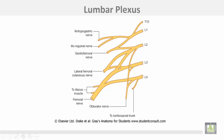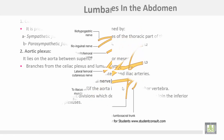These are the branches coming out from the lumbar plexus: ilio-hypogastric, ilio-inguinal, genito-femoral, lateral cutaneous nerve of the thigh. This is the femoral nerve and this is the obturator nerve.